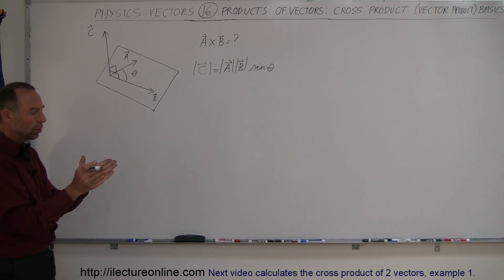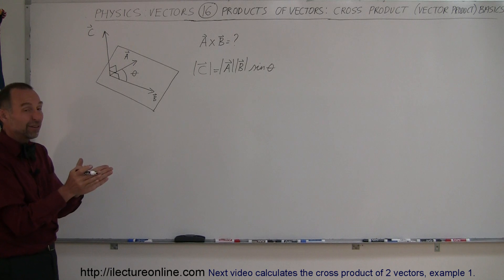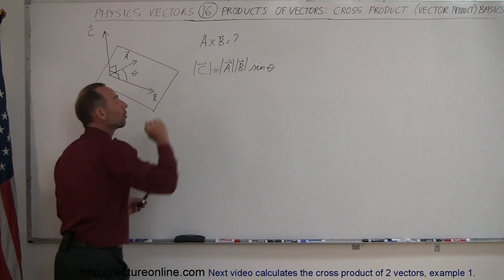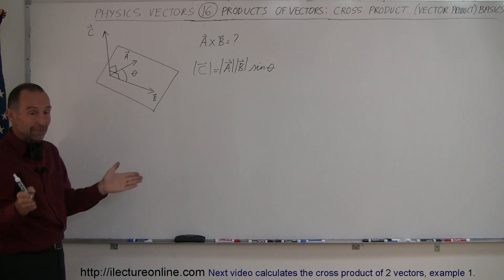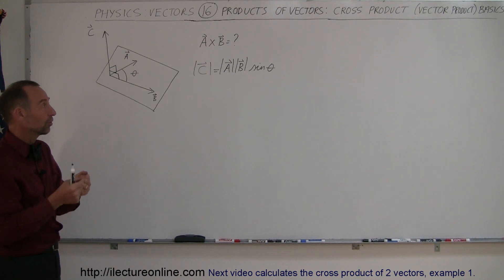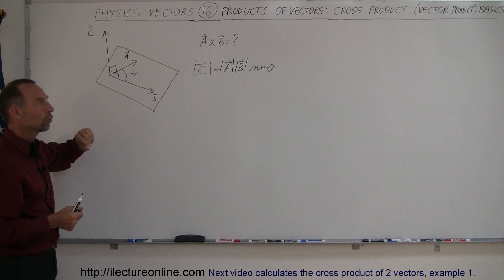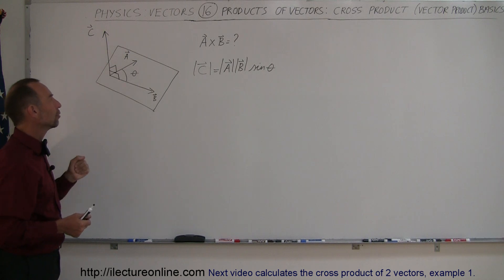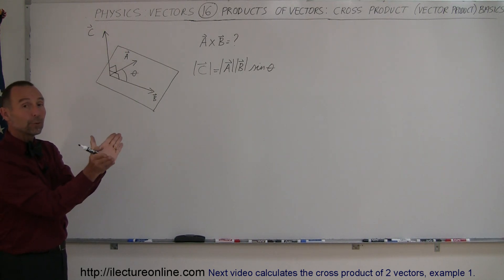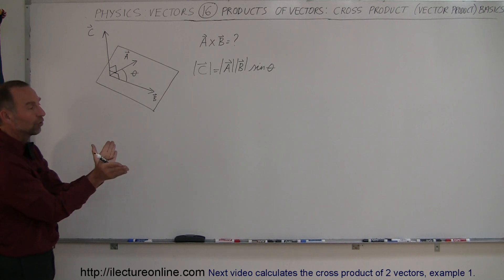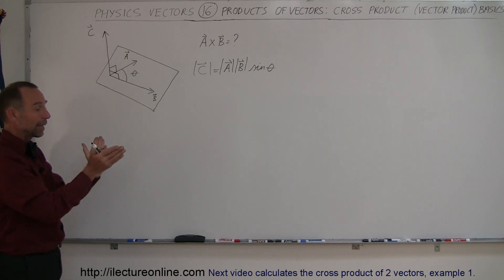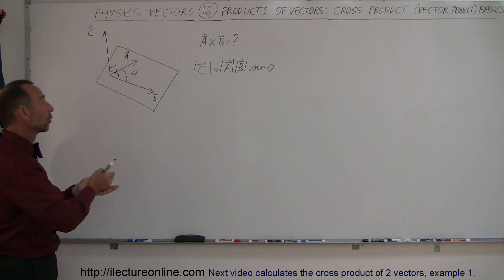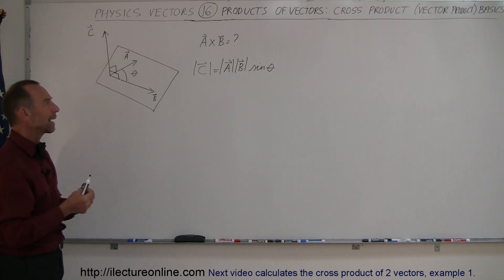As the angle gets smaller than 90 degrees — say 45, 30, or 10 degrees — the smaller the angle, the smaller the sine, and therefore the smaller the magnitude of C. If A and B are parallel and the angle between them is 0, sine of 0 is 0, so the magnitude of C goes to 0. Similarly, if the angle exceeds 90 degrees and reaches 180 degrees, sine of 180 degrees is also 0, and the magnitude of C goes to 0 again.